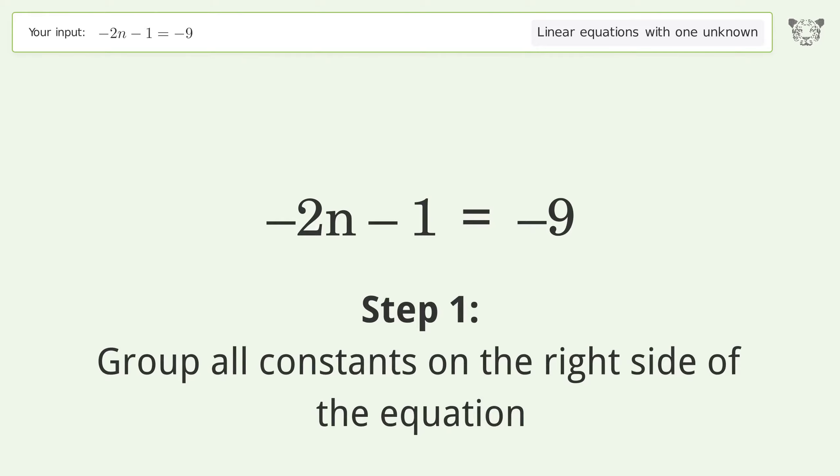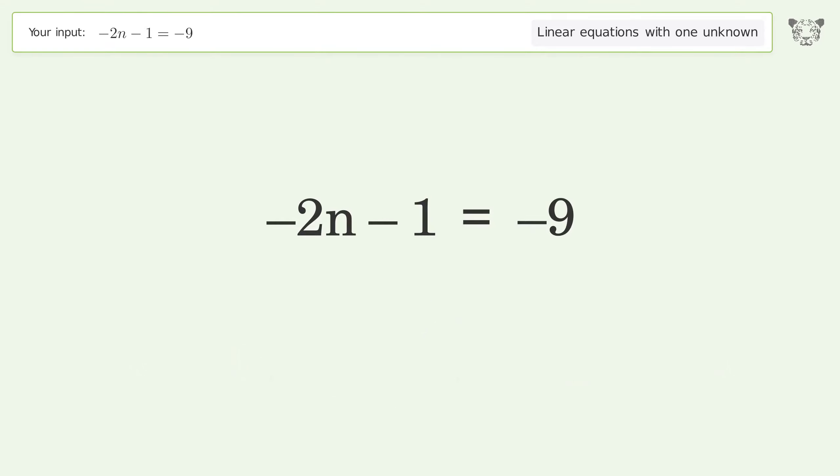Group all constants on the right side of the equation. Add 1 to both sides. Simplify the arithmetic.